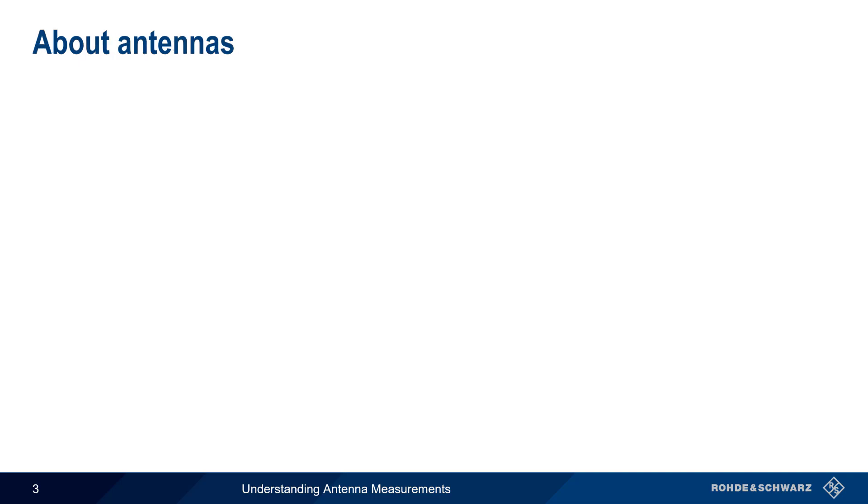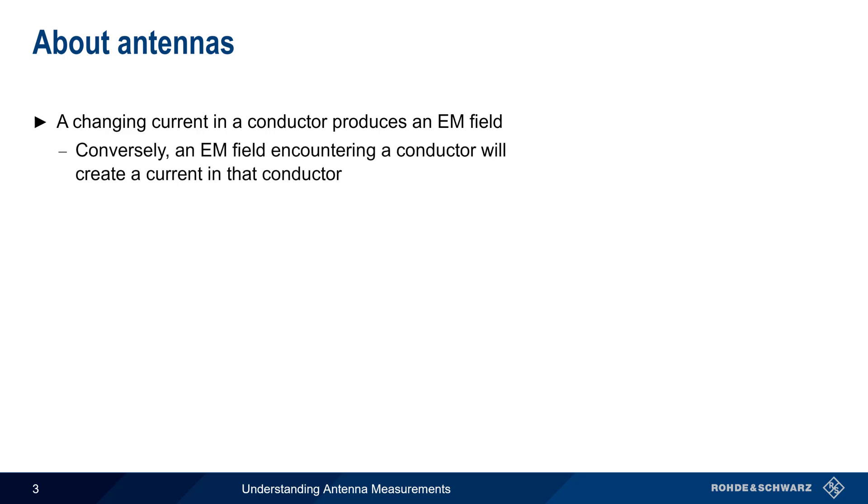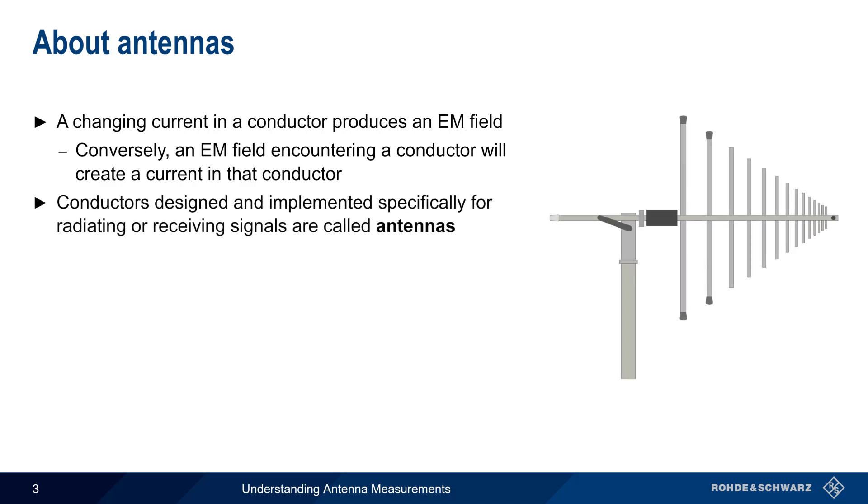As you probably already know, a changing current in a conductor produces an electromagnetic field that will radiate outwards from that conductor. Conversely, if this radiated electromagnetic field encounters or cuts across a conductor, this will induce a current within that conductor. When one or more of these conductors are designed and implemented specifically for radiating or receiving signals, these are called antennas.